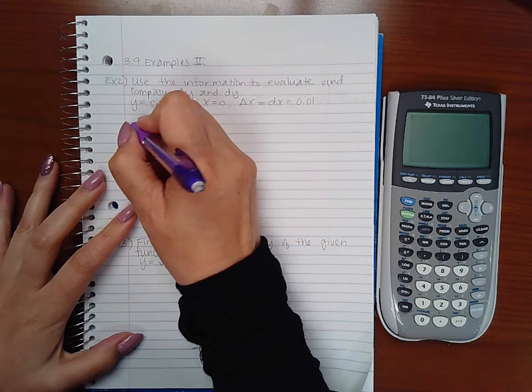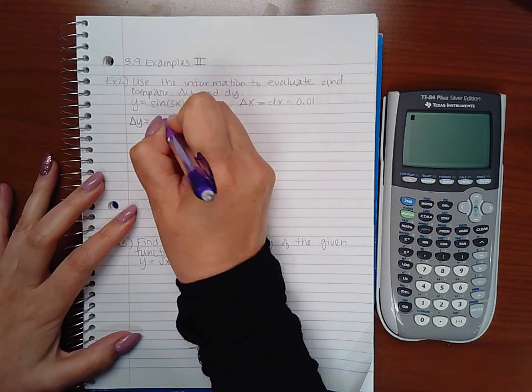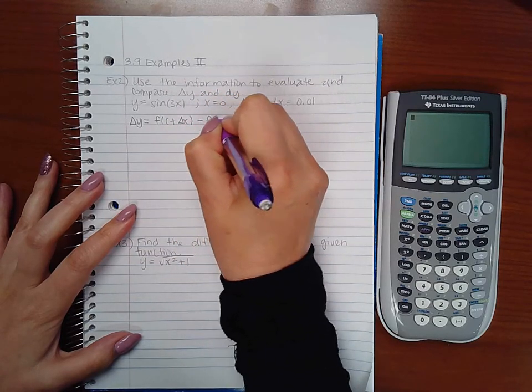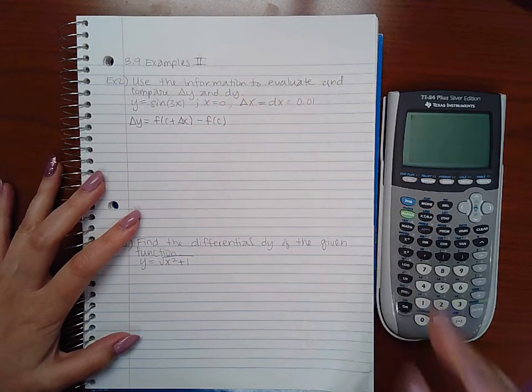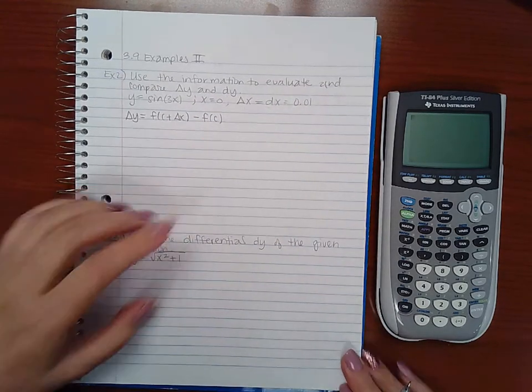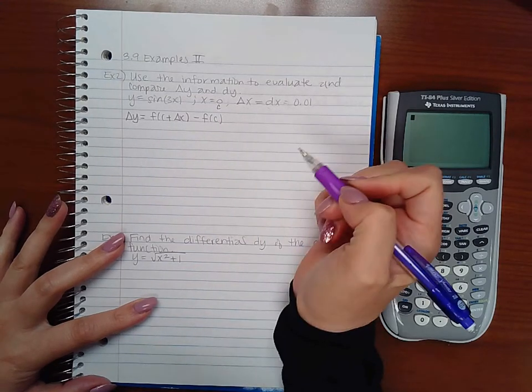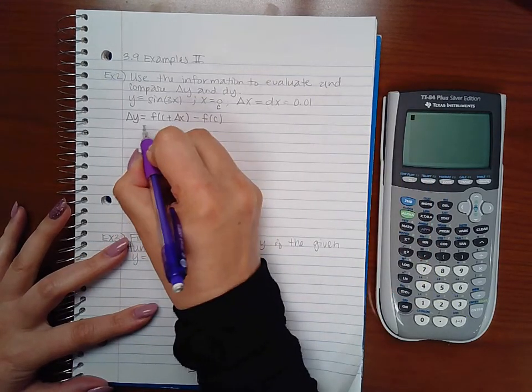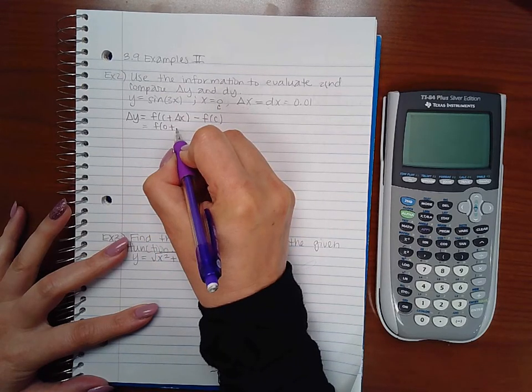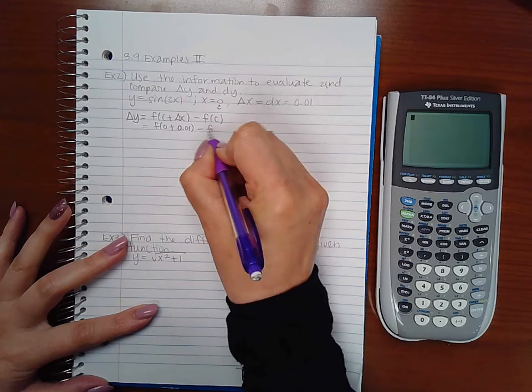You have to remember the formulas for each one. For delta y, the formula is one y value minus the other y value. So the bigger y value or the second y value minus the first y value. Well in this case c is equal to 0 here. So what we're going to have is 0 plus delta x, and delta x is 0.01, minus f of 0.